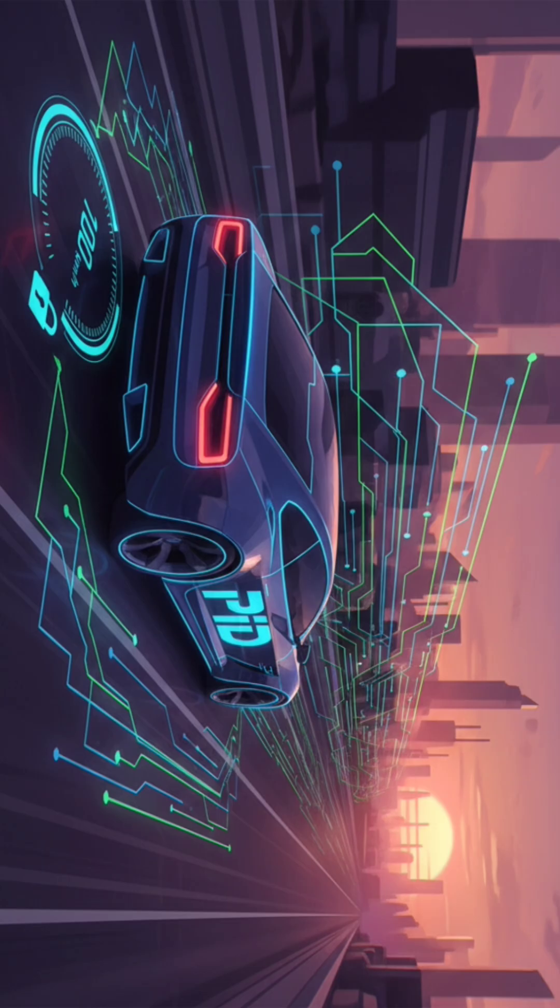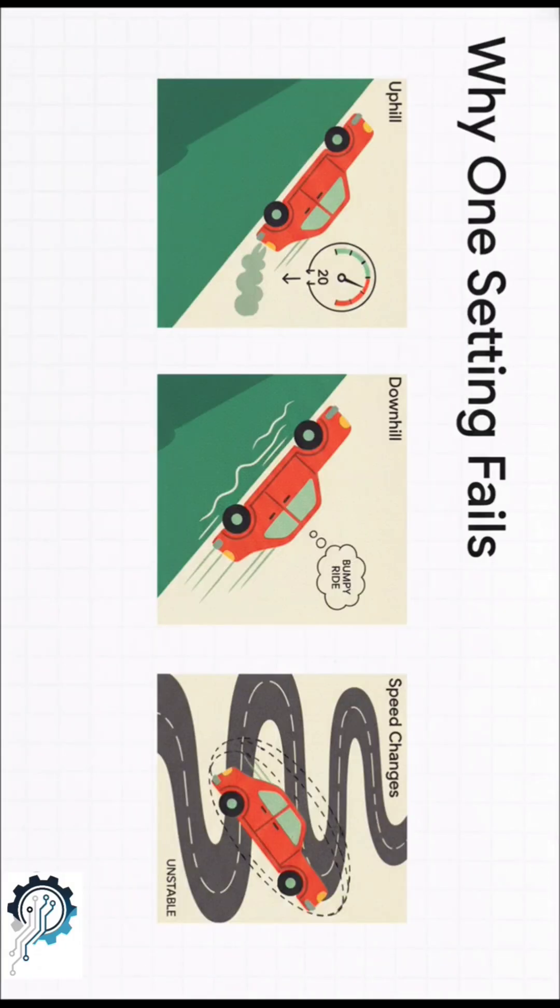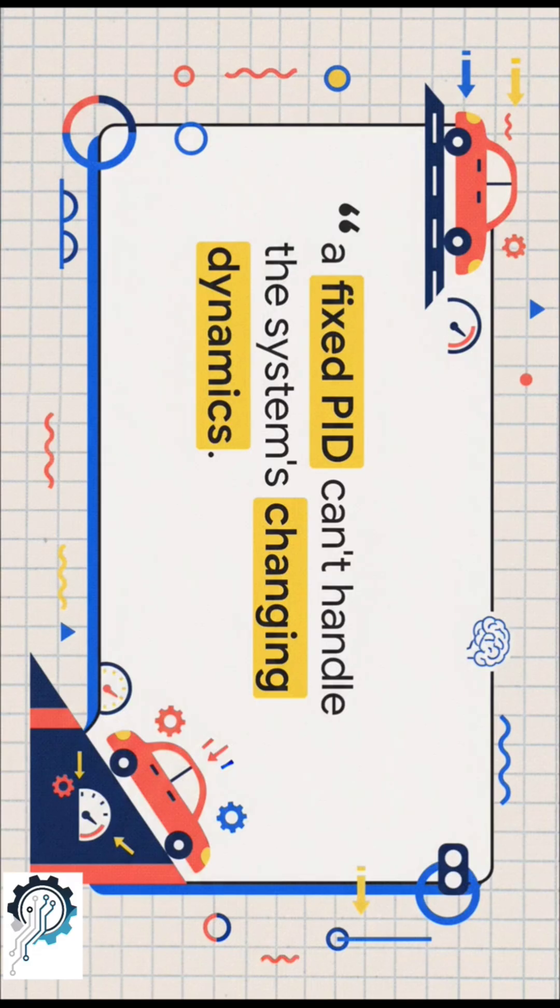Basic cruise control uses what's called a fixed PID controller. You can think of it as one size fits all, and that single setting just can't keep up. Uphill, it loses speed. Downhill, it can overreact. Clearly, a fixed controller just can't handle these changing dynamics.